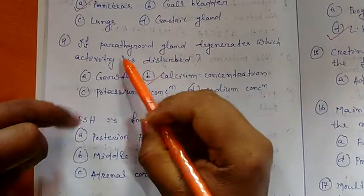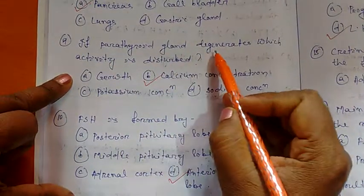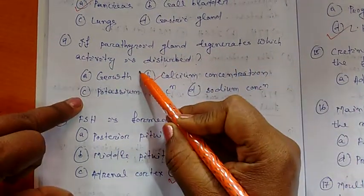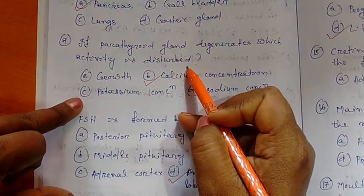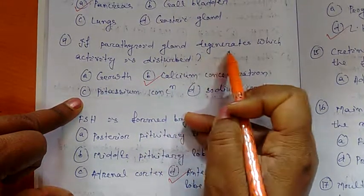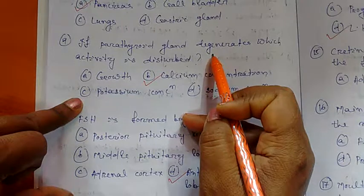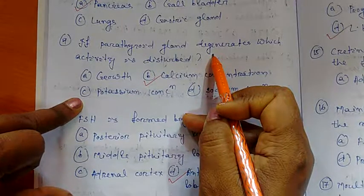Number 9. If parathyroid gland degenerates, which activity is disturbed? Parathyroid gland degenerates, that means destroys. The blood calcium level is not maintained.